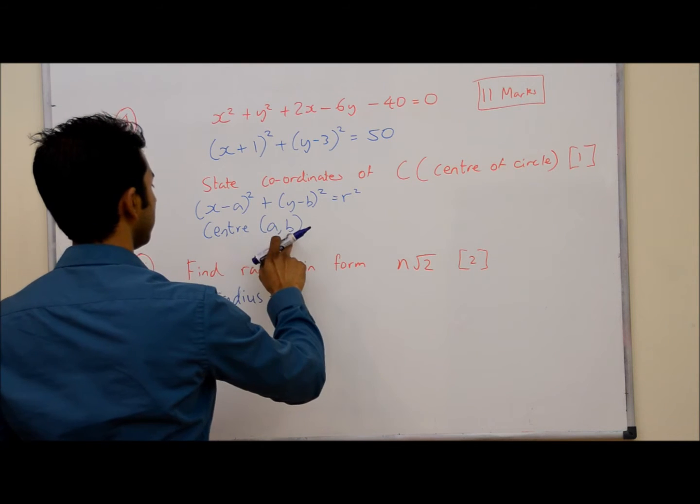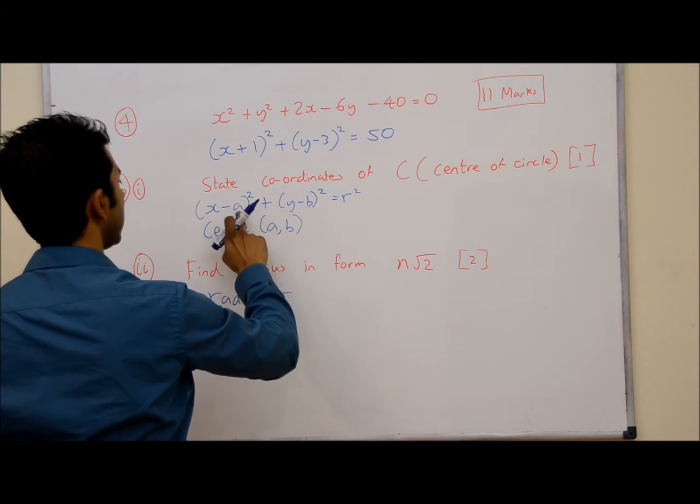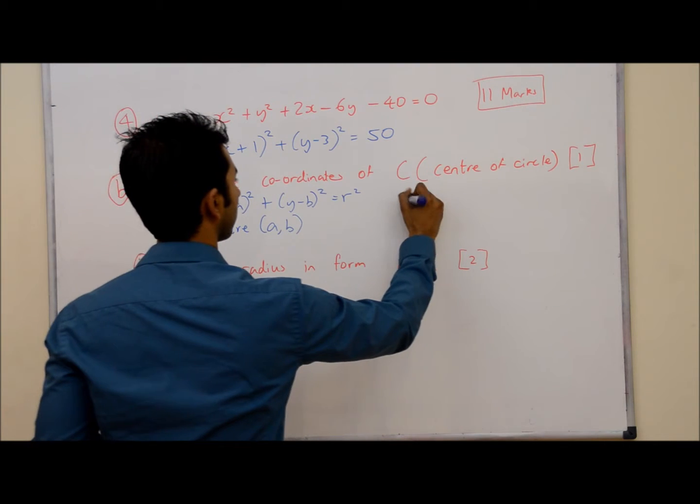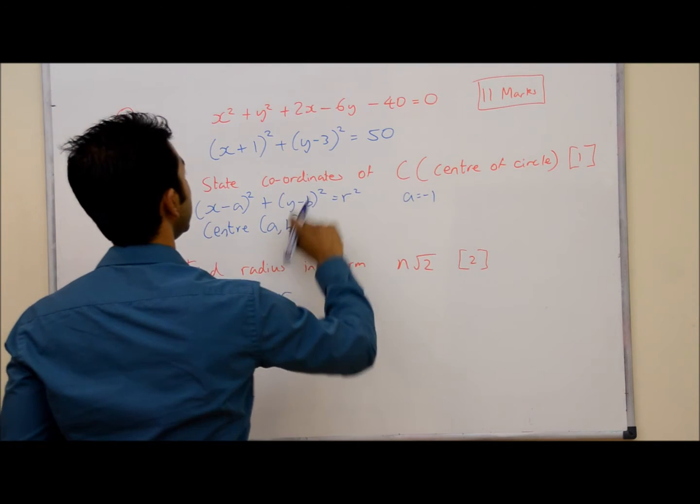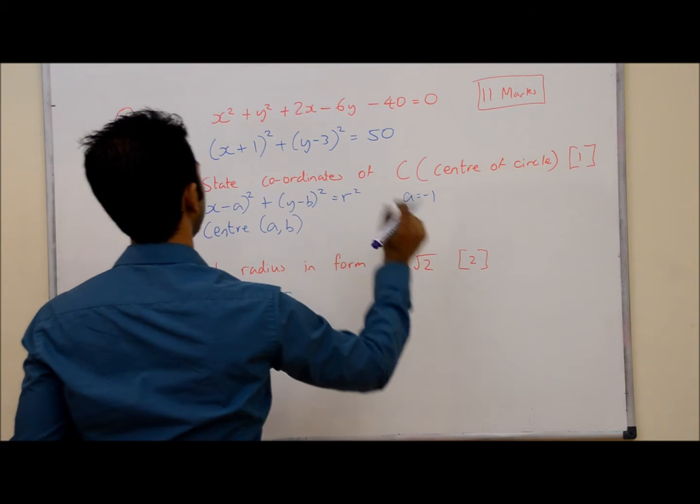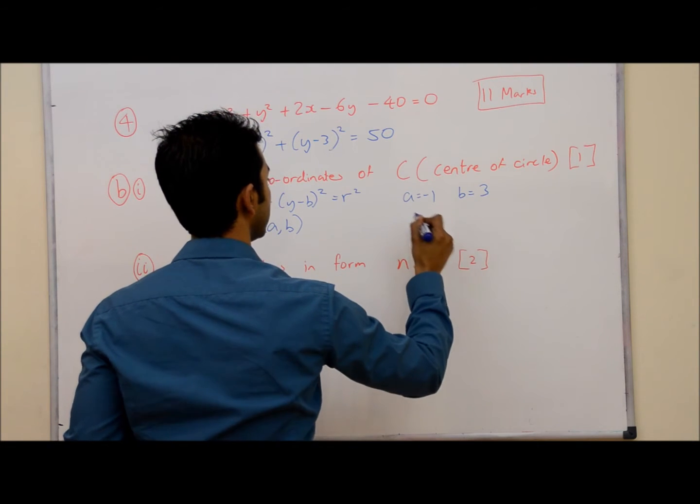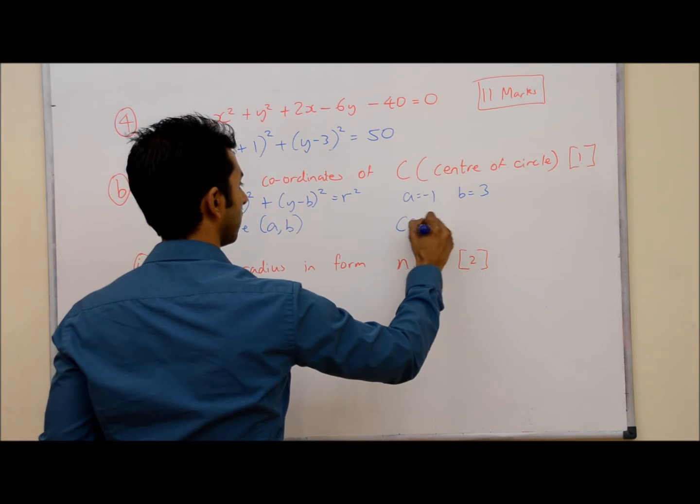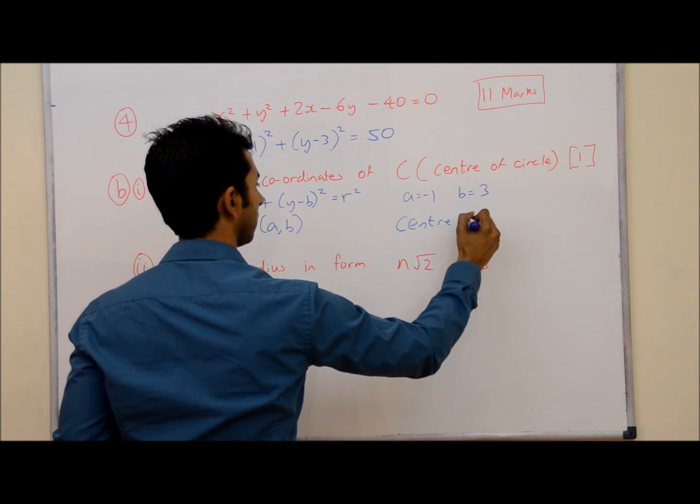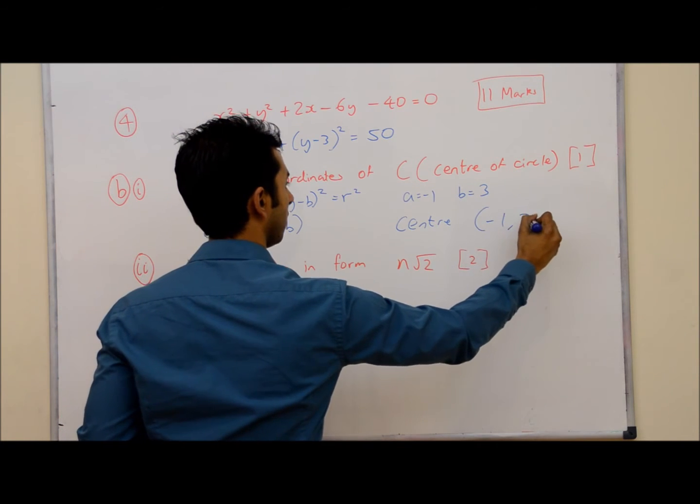So, if the centre of the circle is (a,b). Now, in my question, a is minus 1 and b is 3. So, the centre of my circle is simply (a,b), which is (-1, 3).